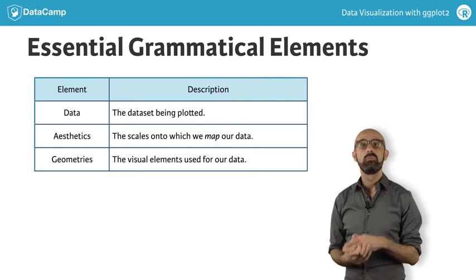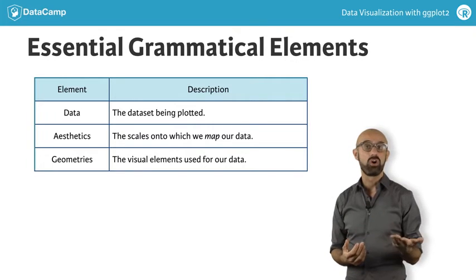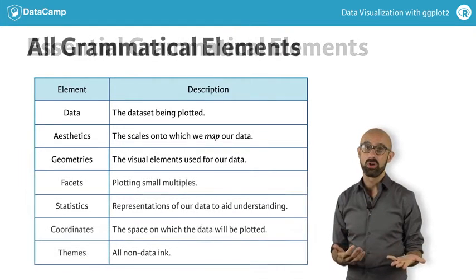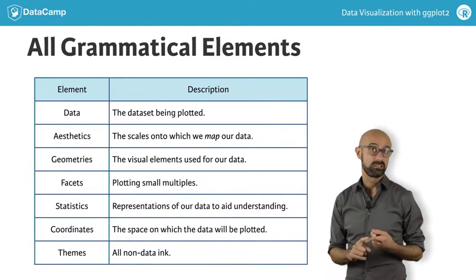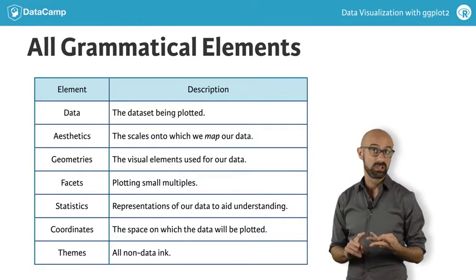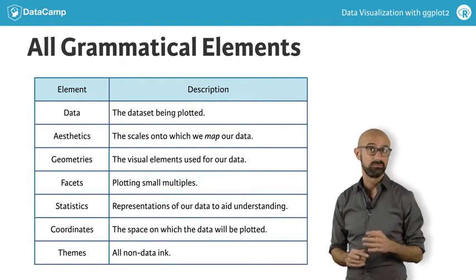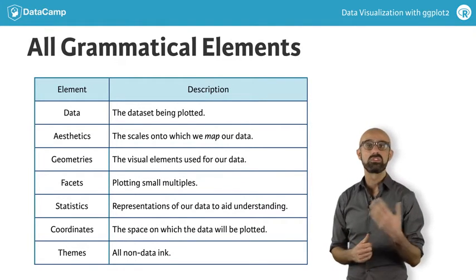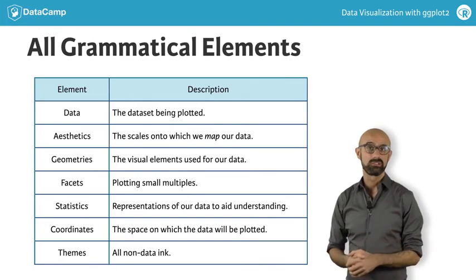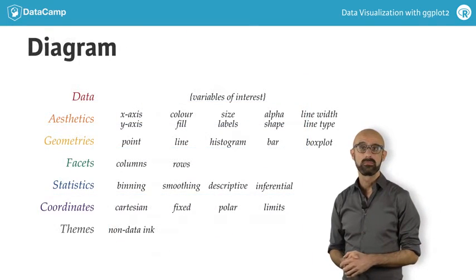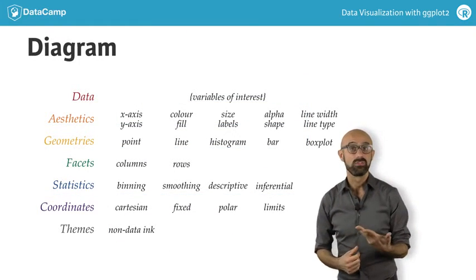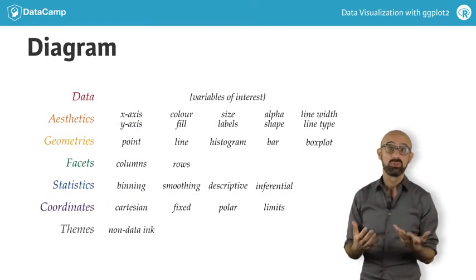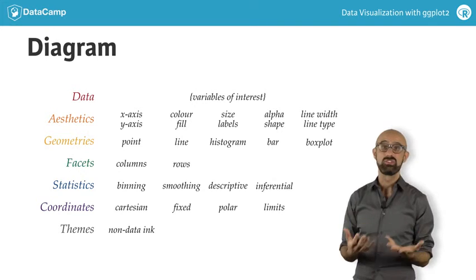The remaining elements are optional, and control details of our plots. They are the facets, statistics, coordinates, and theme layers. We will explore the optional layers in the next course. This diagram gives an example of some of the terms we'll encounter in each layer.